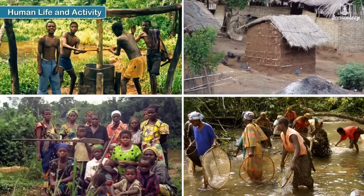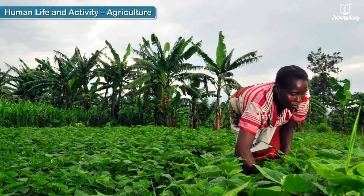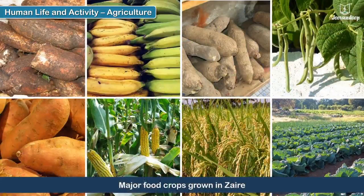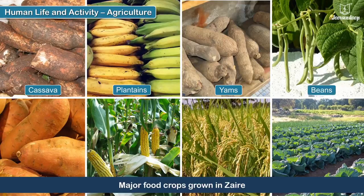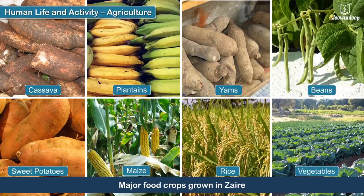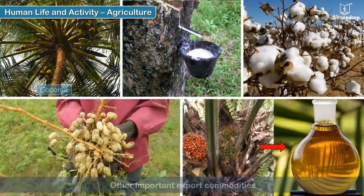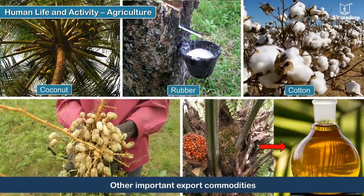Human life and activity — Agriculture: Farming is largely practiced in Zaire. Major food crops grown are cassava, plantains, yams, beans, sweet potatoes, maize, rice and vegetables. Robusta coffee is the main cash crop, while crops such as coconut, rubber, cotton, groundnuts and palm oil are a few other export commodities.